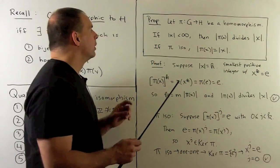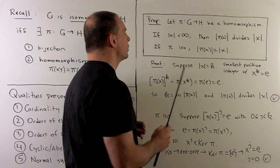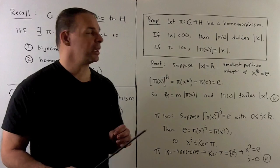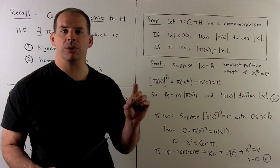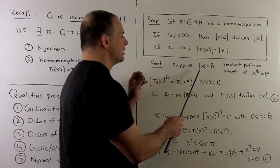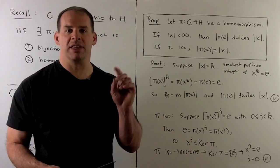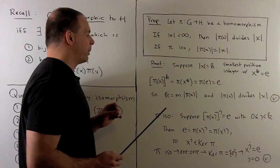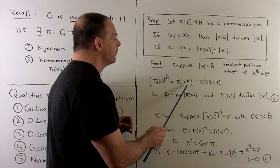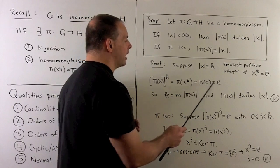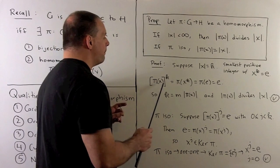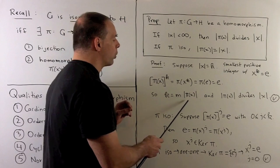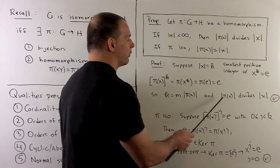For property two, if I have a homomorphism pi going from G to H, and the order of element X in G is finite, then the order of pi(X) divides the order of X. If we have an isomorphism, then the order of pi(X) is equal to the order of X. To see this: suppose the order of X equals K — that's the smallest positive integer such that X to the K equals the identity in G. We take pi(X) raised to the Kth power; by the homomorphism property we can move the K inside, giving us pi of the identity, which is the identity in H. So the order of pi(X) might equal K but might be smaller, and if smaller it must be a divisor of K.